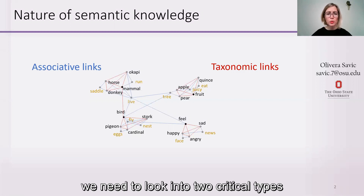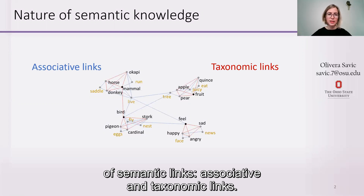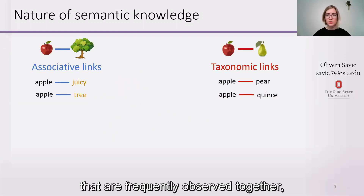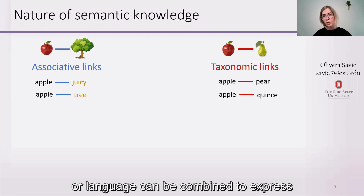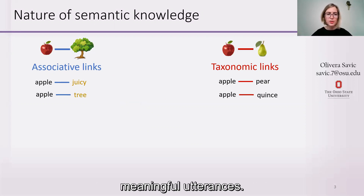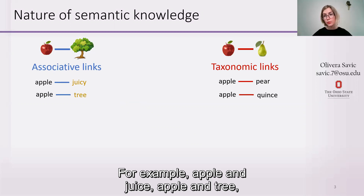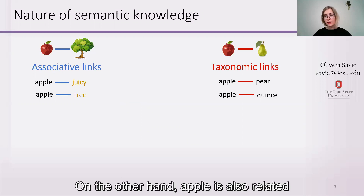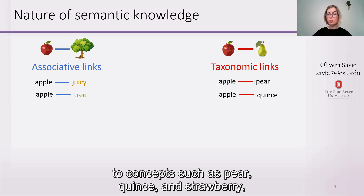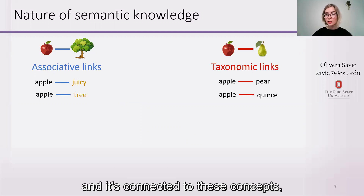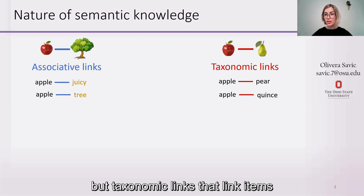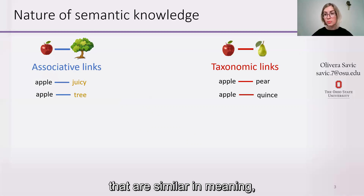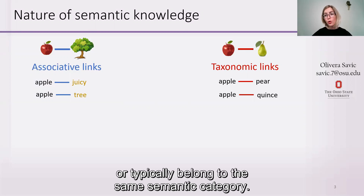To understand semantic knowledge, we need to look into two critical types of semantic links: associative and taxonomic links. Associative links connect items that are frequently observed together or in language could be combined to express meaningful utterances. For example, apple and juicy, apple and tree, apple and eat are associatively related. On the other hand, apple is also related to concepts such as pear, quince, and strawberry, connected by taxonomic links that link items that are similar in meaning, share some important features, or typically belong to the same semantic category.